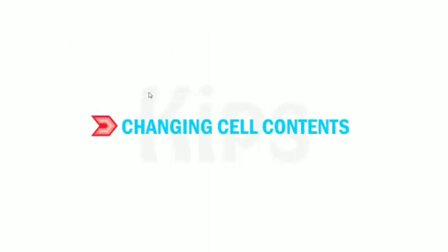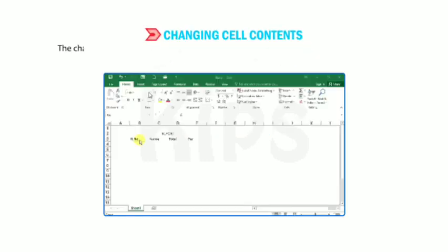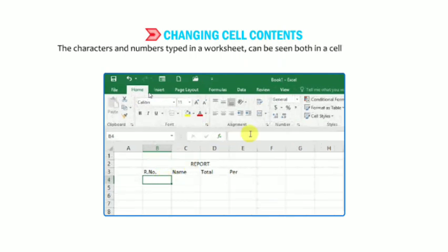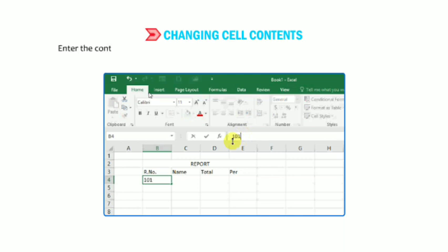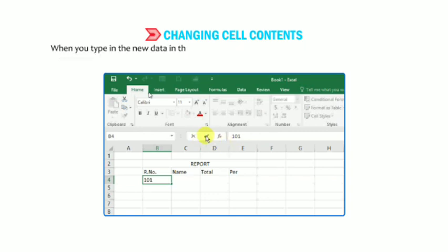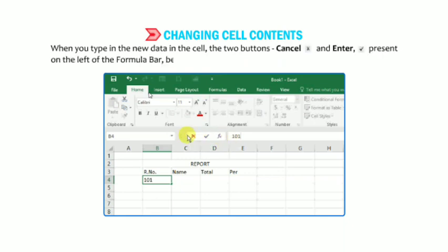Now, changing cell contents: the characters and numbers typed in a worksheet can be seen both in the cell and on the formula bar. Enter the contents and press either the Enter key or the Enter button on the formula bar to accept the entry. When you type new data in a cell, the two buttons — Cancel and Enter — present on the left of the formula bar become active.